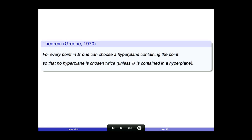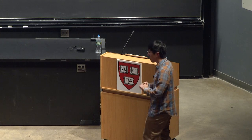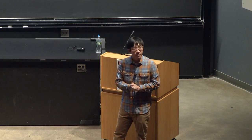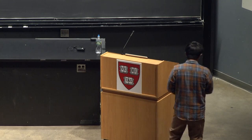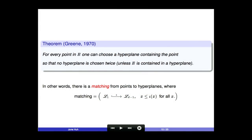It turns out that such an injection does exist. A theorem of Green says exactly this: for every point in your configuration E, you can choose a hyperplane containing that point — one of the hyperplanes determined by the configuration — so that no hyperplane in the list is chosen twice. With one obvious exception: that E is not contained in any hyperplane.